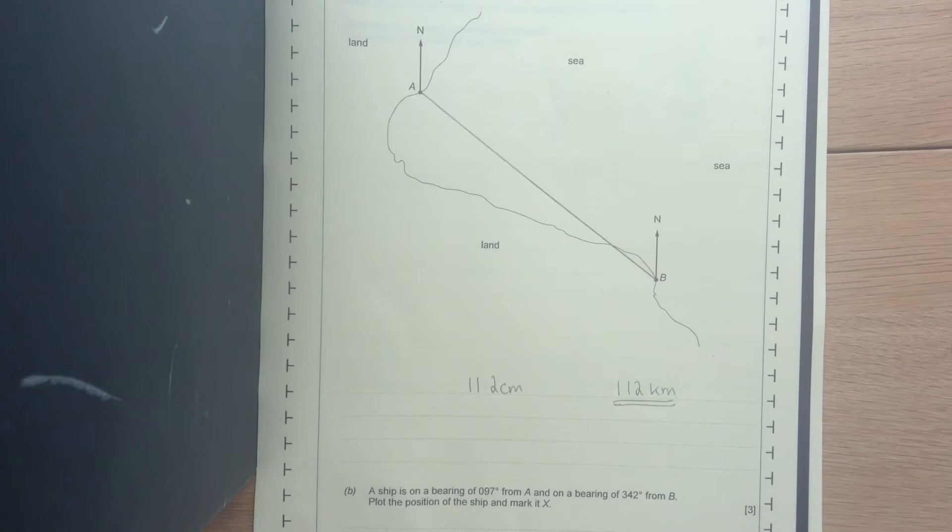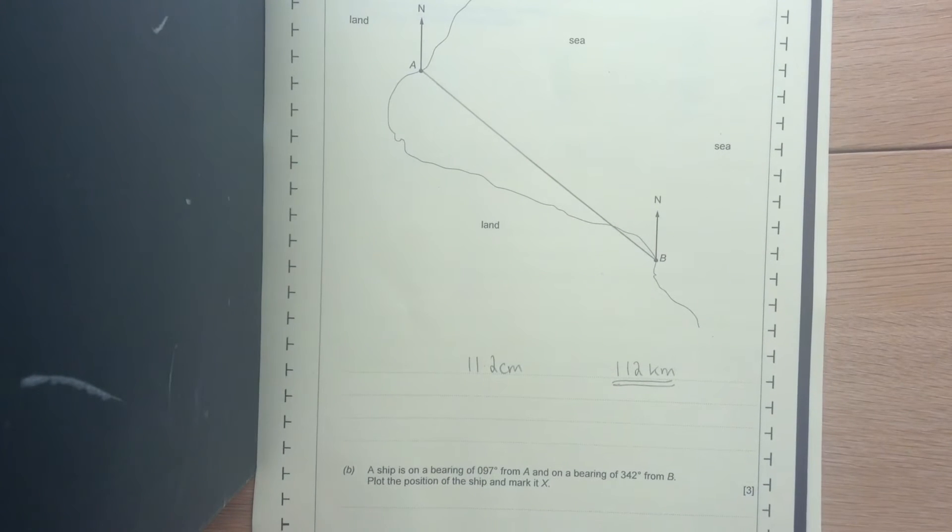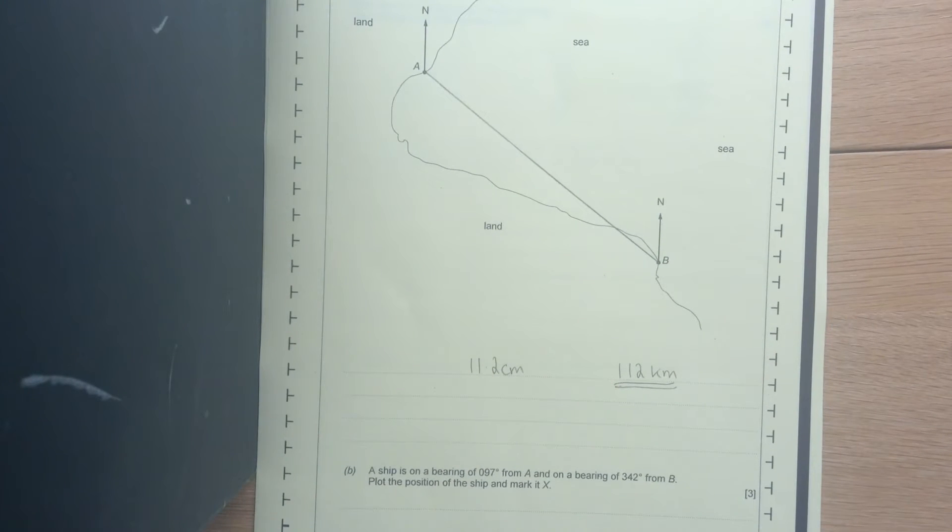The second part says, A ship is on a bearing of 097 from A and a bearing of 342 from B. Plot the position of the ship and mark it X.